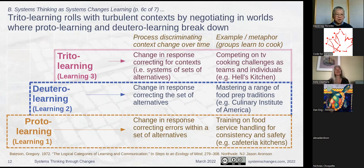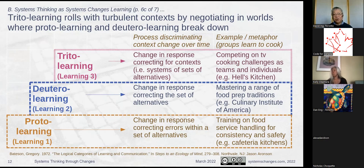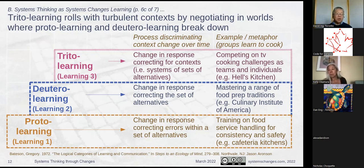In proto-learning, as an example in a cafeteria kitchen, you want to make sure they do the same thing over and over again — very strict rules, follow them. Deutero learning would be going to the Culinary Institute of America and learning American, Italian, French, and Chinese cooking — different types of tricks. When you get to trido learning, it's like being on Hell's Kitchen on television: you don't even know what the ingredients are when you get there, you don't know who the team is, but you learn to adjust. These are all types of learning we're trying to instill with systems changes learning.